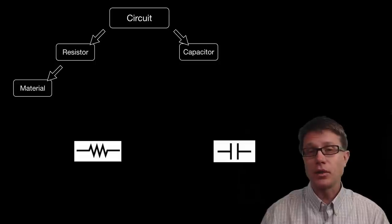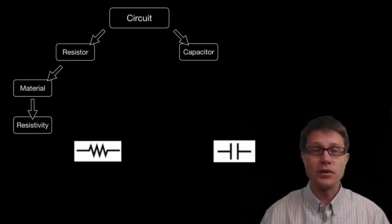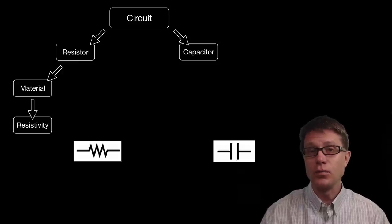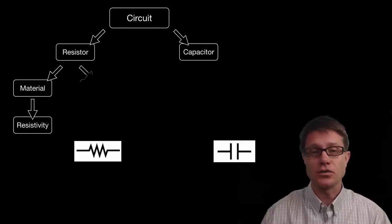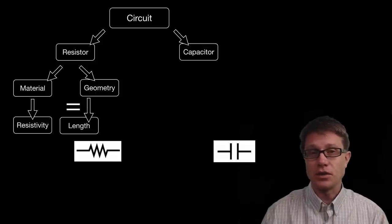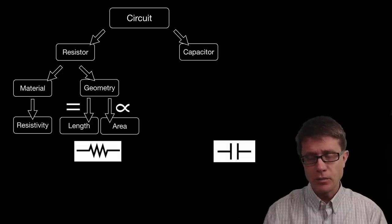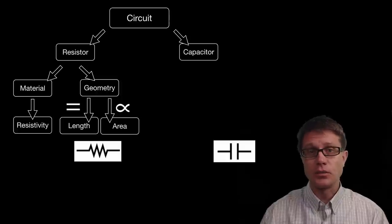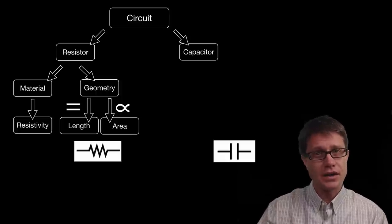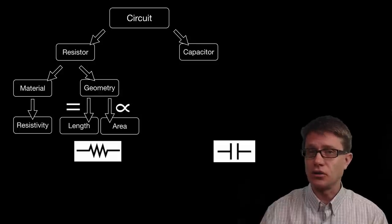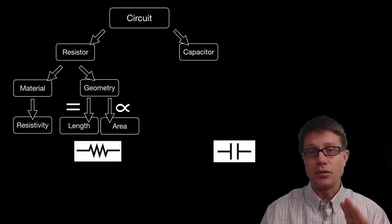With a resistor we want to increase the resistance. One way to do that is through the material it is made of — high resistivity is going to slow the movement of current and give us a better resistor. Geometry matters too: there is a direct relationship between the length of the resistor and the resistance it offers, and an indirect relationship with cross-sectional area. If we make a resistor longer we have greater resistance, but if we make it wider we have less resistance. So for a good resistor: high resistivity, long length, and a really narrow cross-sectional area.